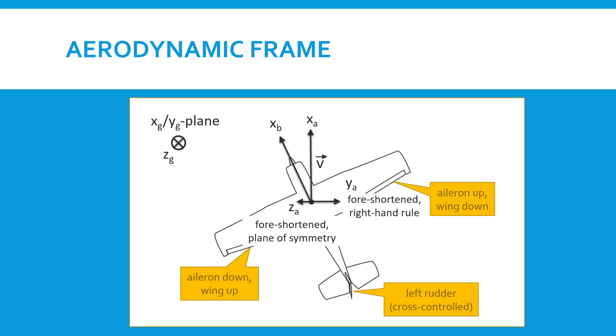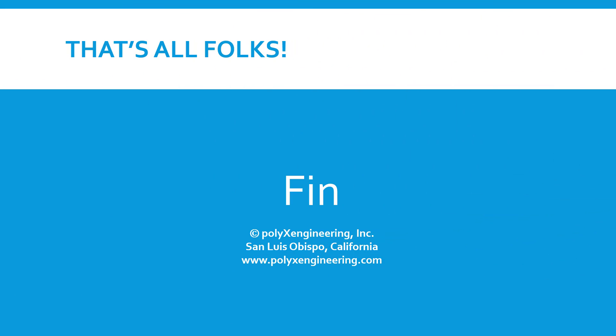And this is called a right slip to landing. That covers these coordinate systems.